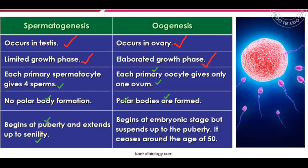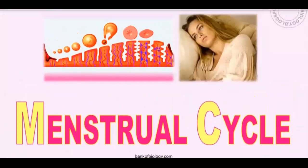But in the case of oogenesis, it begins at menarche and is paused at menopause — at around age 50, though it may vary from person to person. Because we have only 60,000 to 80,000 cells, and every month one ovary releases one ovum, at a certain stage the woman is unable to form the ovum.